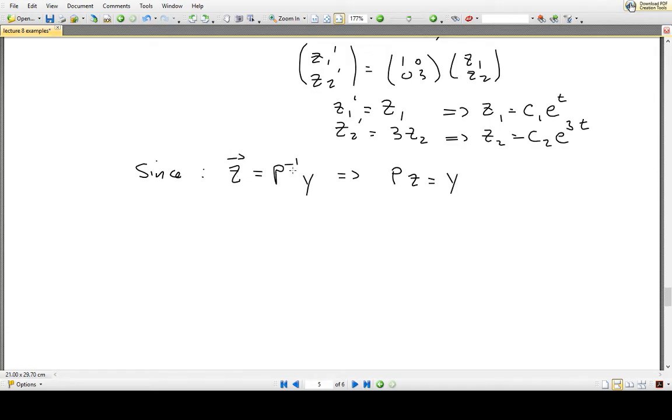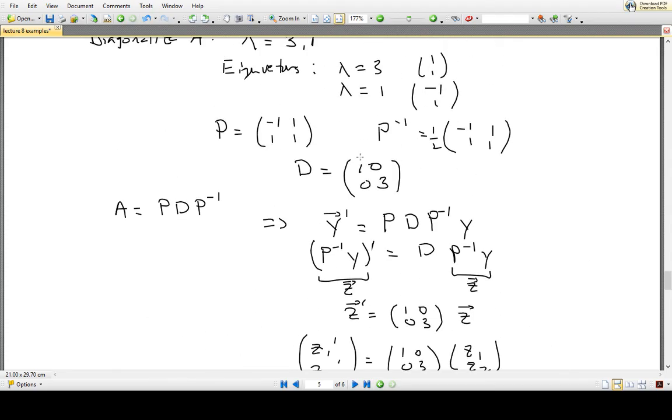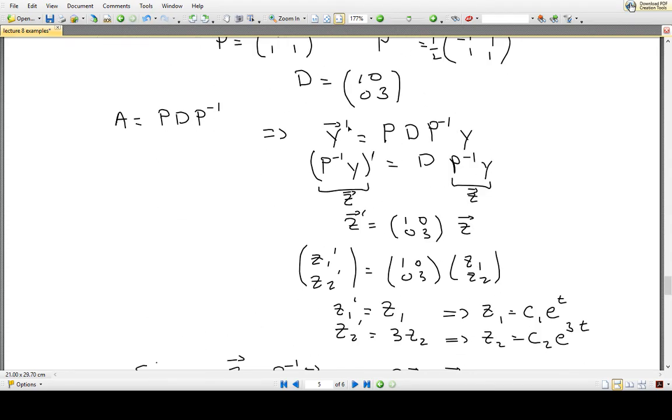And so this Y1 and Y2 that we have, or that we want, Y1 and Y2 that we want is actually equal to P, this our P matrix, times [Z1, Z2], which we know P is equal to [[-1,1],[1,1]].